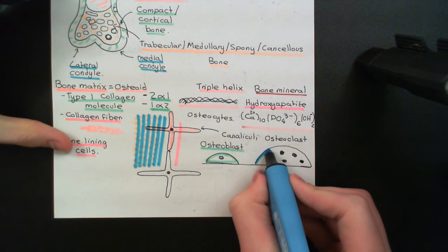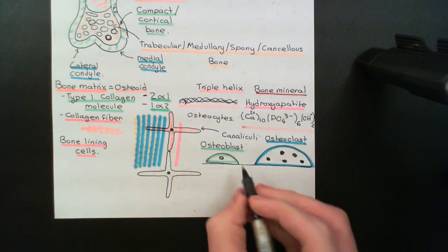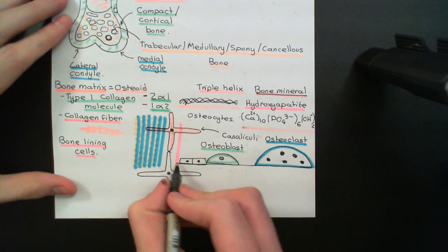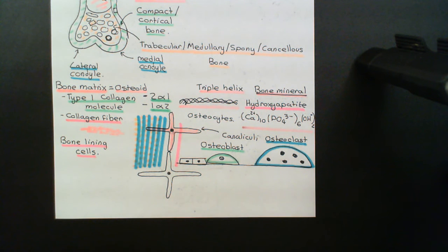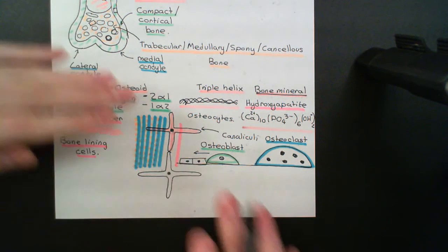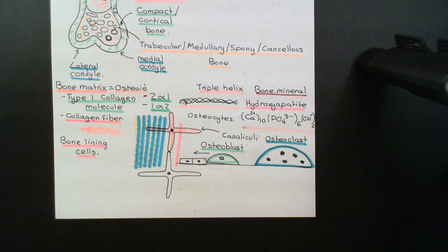Osteoclasts also sit on the surface of bone and interrupt the layer of bone lining cells. You'd usually have bone lining cells covering the edge of the bone, but dotted around are these osteoblasts and osteoclasts. Osteoblasts and osteoclasts are not static — they are mobile and move around over the surface of the bone. As they move, the bone lining cells get out of their way, parting to clear the path so osteoblasts and osteoclasts can move along the bone surface.